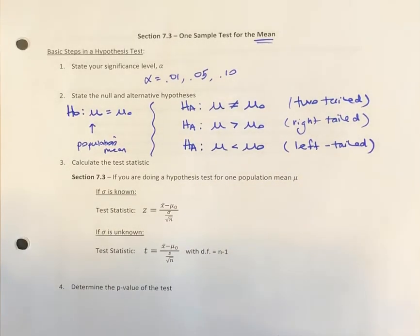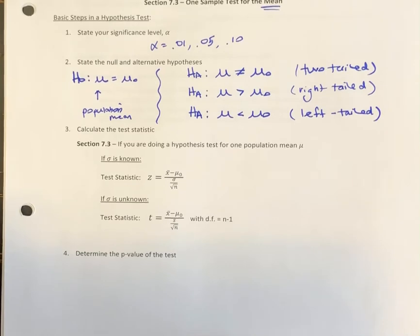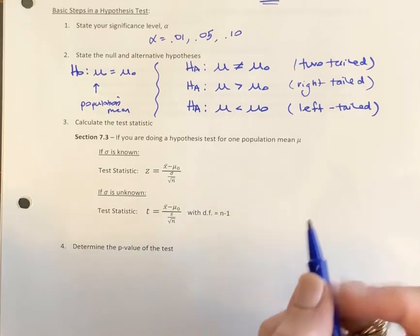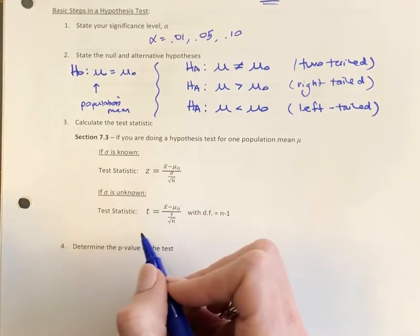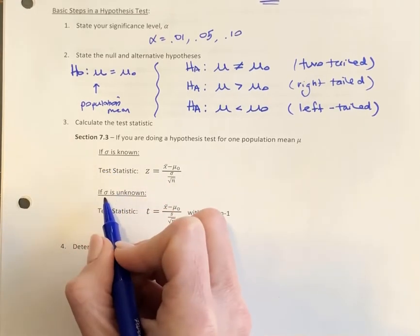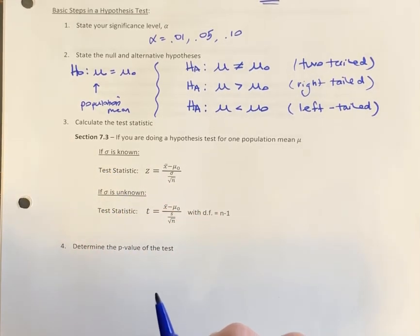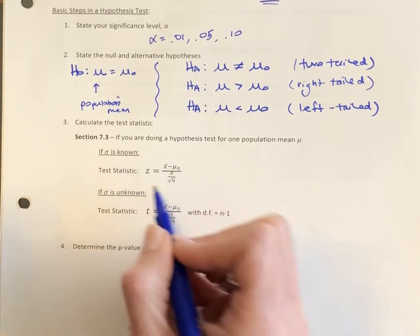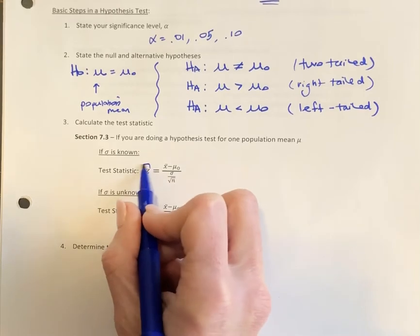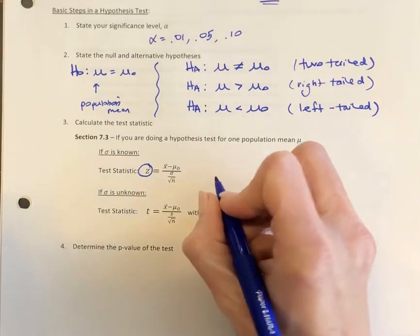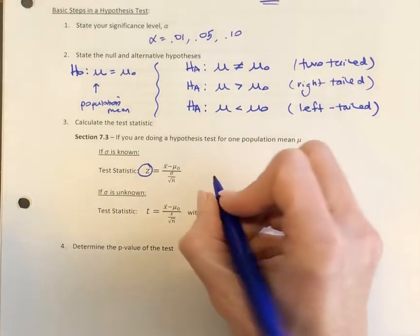The third step is to calculate our test statistic, just like it was for testing a population proportion. This time there are two different test statistics depending on whether or not we know sigma, the population standard deviation. If sigma is known, we're going to use a z-test statistic. This is the case we're going to start with in the example on the next page.